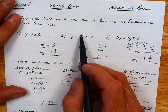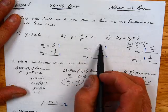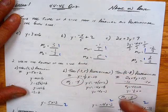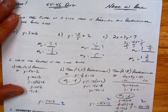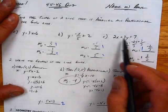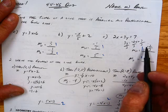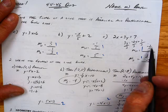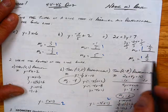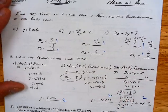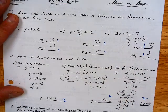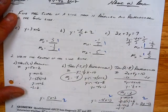This one is negative x over 5, so that's negative 1 fifth. Perpendicular would be 5. On this one, you get y by itself and you get negative 2 thirds, and the perpendicular slope is 3 halves.